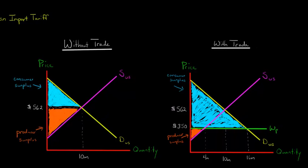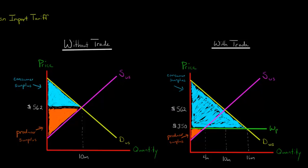With trade — and we haven't introduced the tariff yet — we see that the consumer surplus is going to expand a lot, because the world price of steel is $350, shown by this green line. The consumer surplus expands, and there's a shift from producers to consumers — some of what was producer surplus has now become consumer surplus, shown in blue. So producers are worse off, but consumers are better off. There's also a new triangle with trade that represents an increase in the total surplus, so the US is better off importing with free trade.